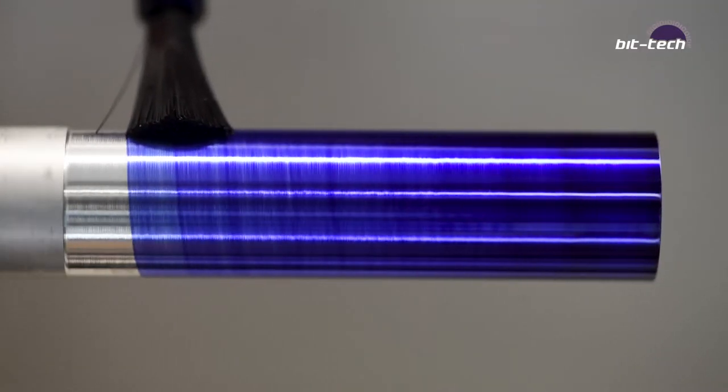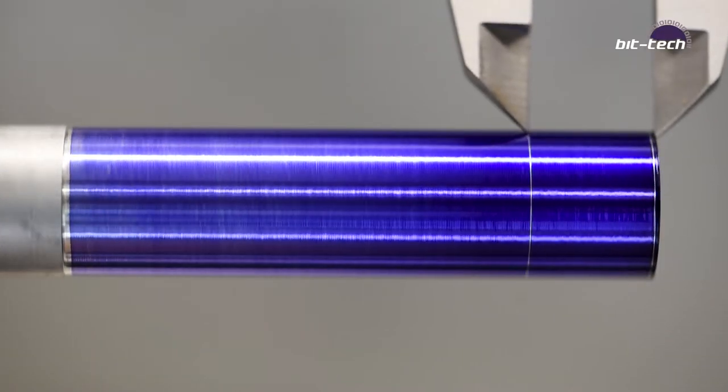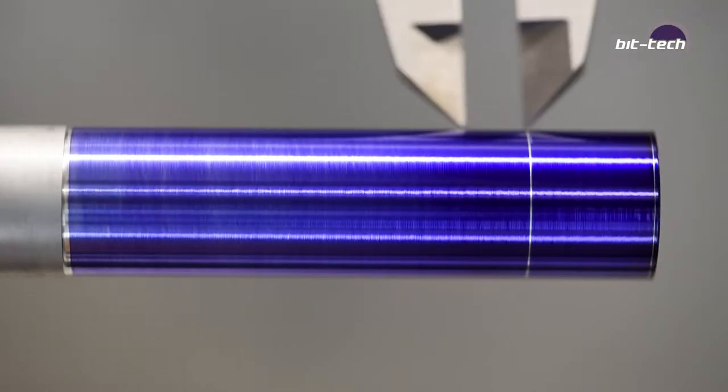Next I coated the piece in layout fluid and then marked the points where we're going to be turning down for the retention screw, measured with vernier calipers.